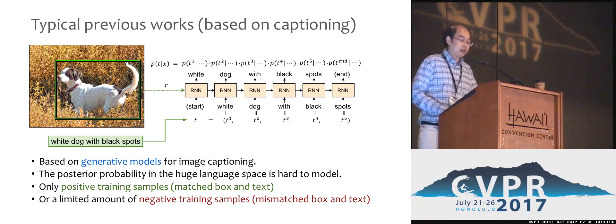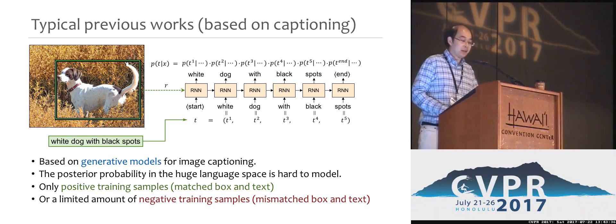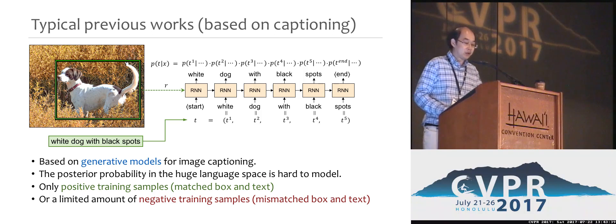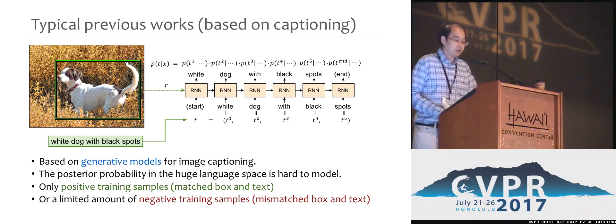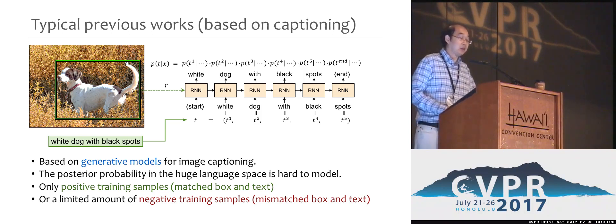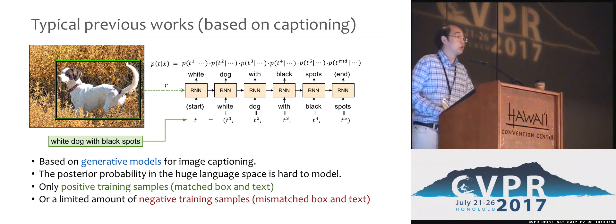But the posterior is hard to fully model in the huge space of natural languages, making the detection score unreliable. As generative models, this method also used only positive text-box pairs, or at most a few negative samples during training.